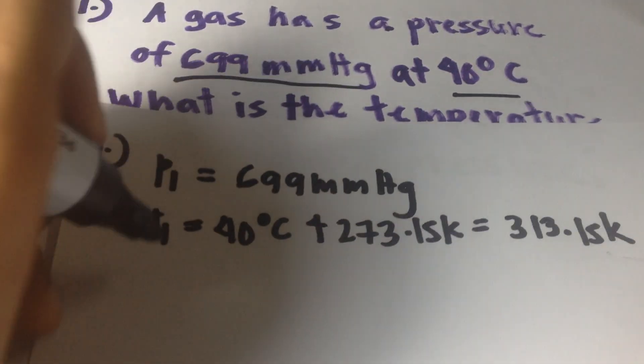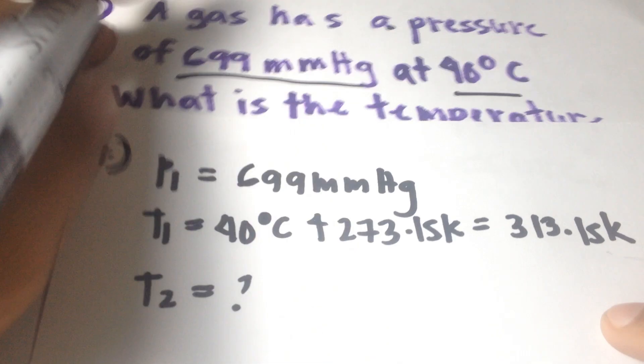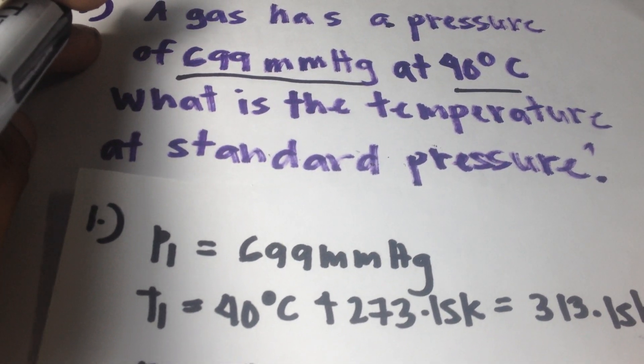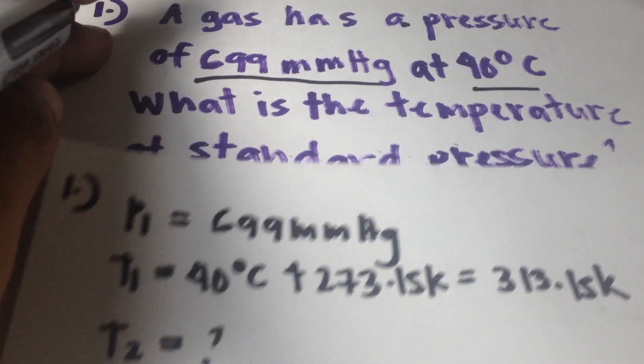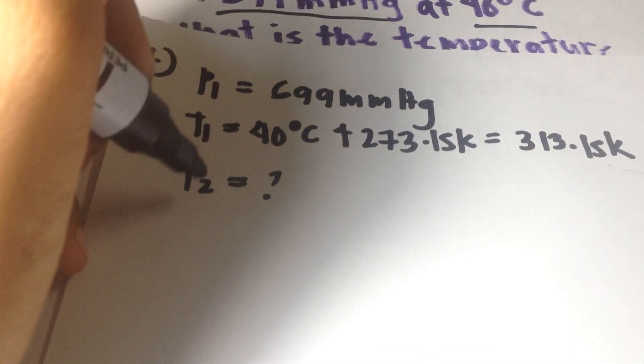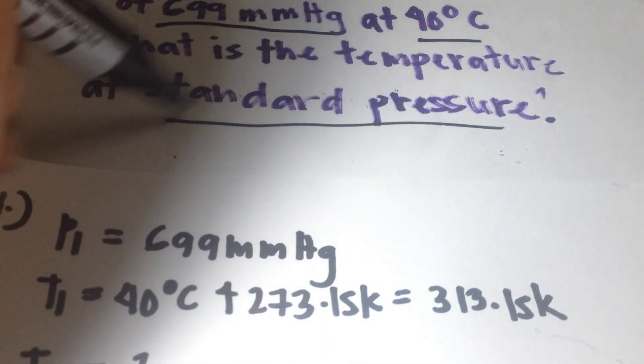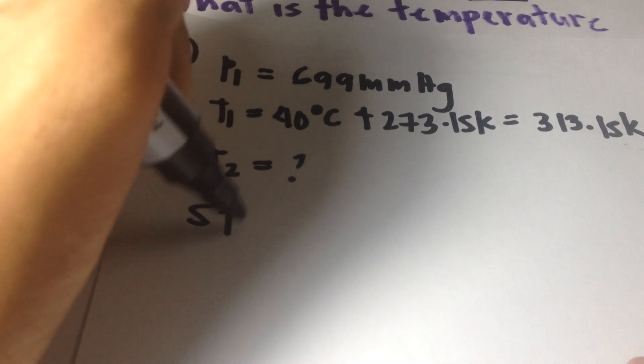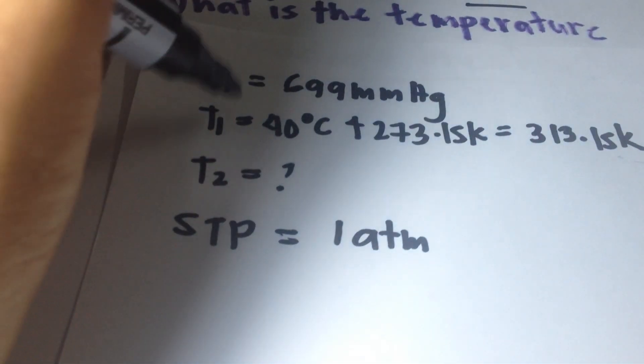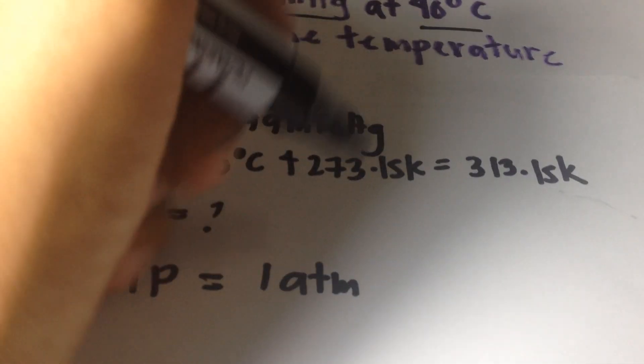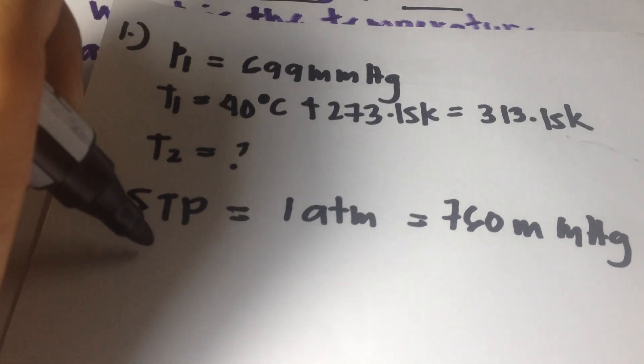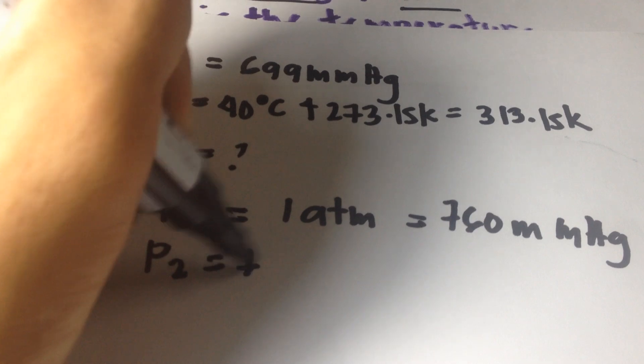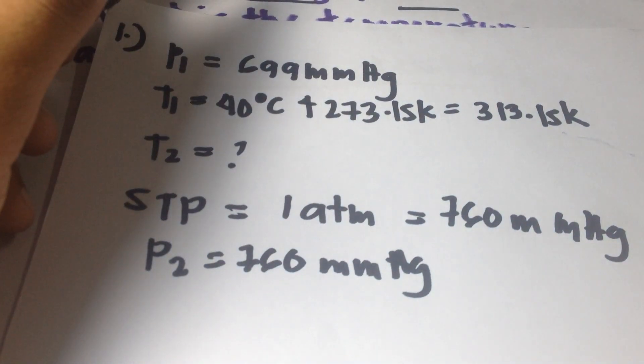Temperature 2 is unknown. Pressure 2 is standard. At 1 atm, the standard pressure - we mean STP - is 1 atm equals 760 mmHg. That is pressure 2: 760 mmHg.